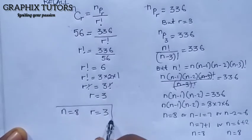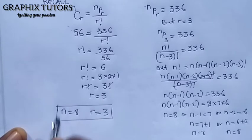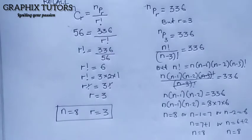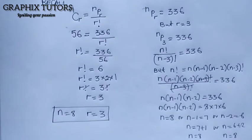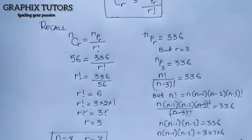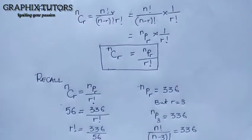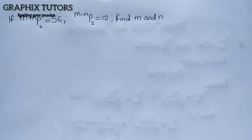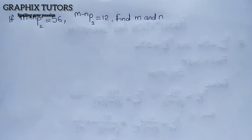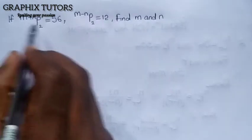Don't forget to click on the subscribe button if you've benefited from this video. Now the next question is: if (n+m) permutation 2 equals 56 and (n minus m) permutation 2 equals 12, find n and m.